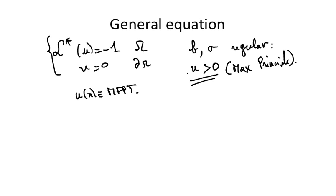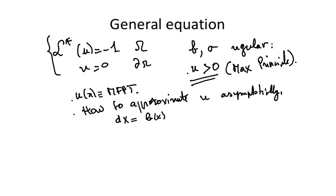We will see in the next classes how to approximate u asymptotically. Asymptotically means we would like to find how it behaves when we have a small parameter, when the stochastic process is dx equals b of x plus square root of 2 epsilon w dot and epsilon small. Then the mean first passage time u depends on epsilon, and the question will be what it is equal to as epsilon goes to 0.